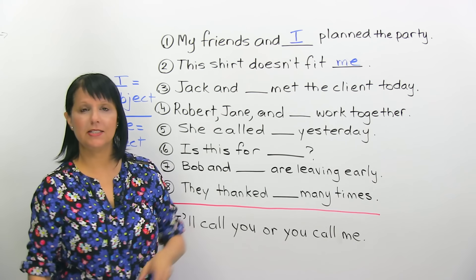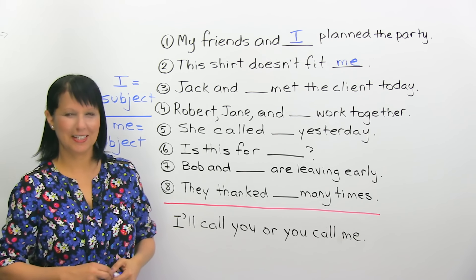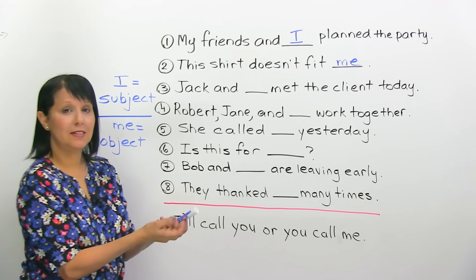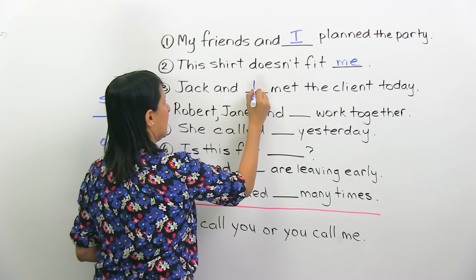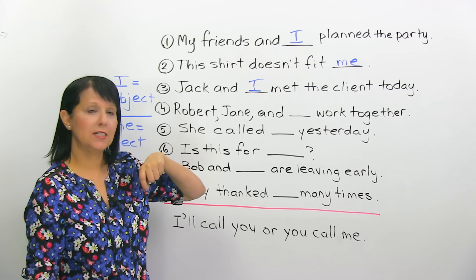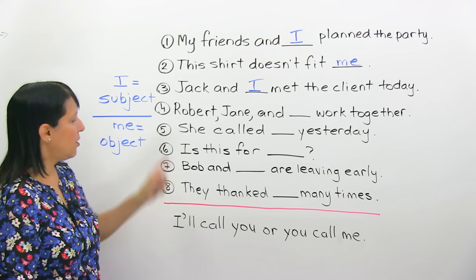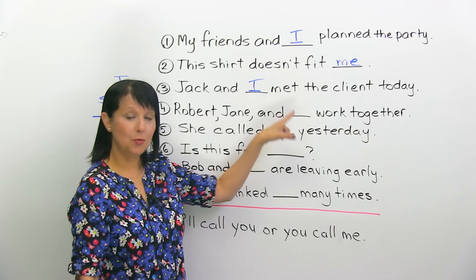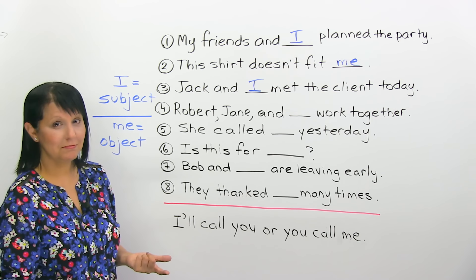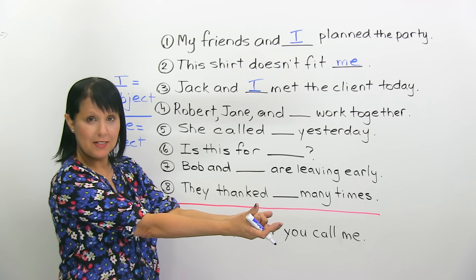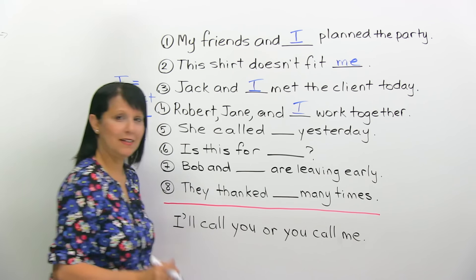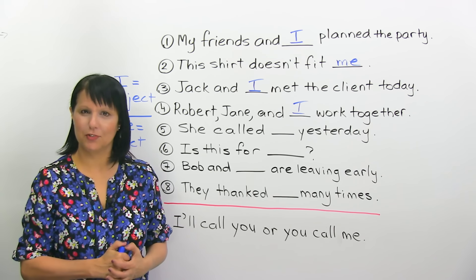'Jack and blank met the client today' — I or me? Think about it — is it a subject? Is it an object? Is it doing the action or receiving the action? It's the subject, and therefore we need to say I. Jack and I met the client. Who's receiving the action? The client. Number four: 'Robert, Jane, and blank work together' — is it I or me? They are part of the subject, so therefore we have to say Robert, Jane, and I work together. No more of these basic mistakes for you.